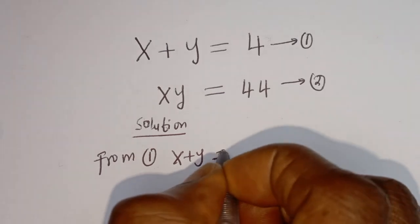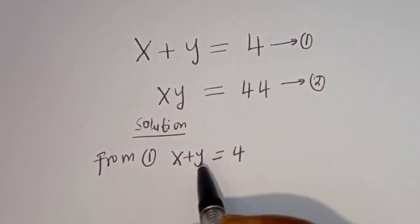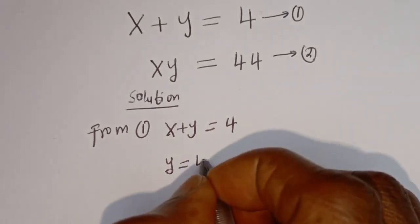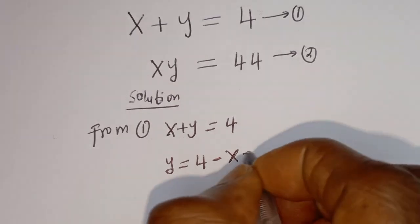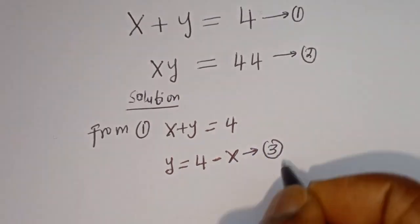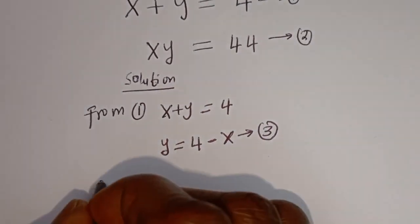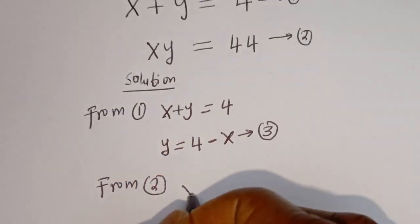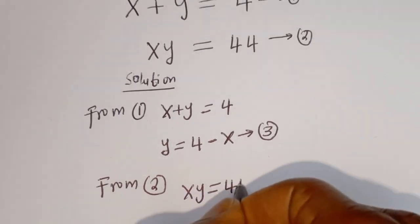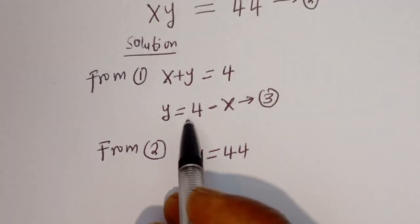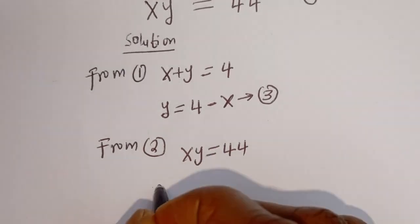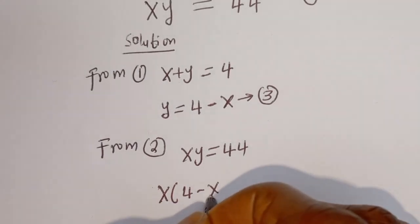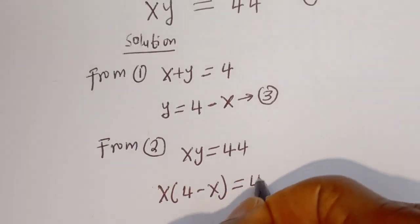From equation 1, x plus y is equal to 4. Let's make y the subject of the formula: y is equal to 4 minus x. Let's call this equation 3. Then from equation 2, x y is equal to 44. We can substitute for y here: x bracket 4 minus x, and we have x times (4 minus x) is equal to 44.